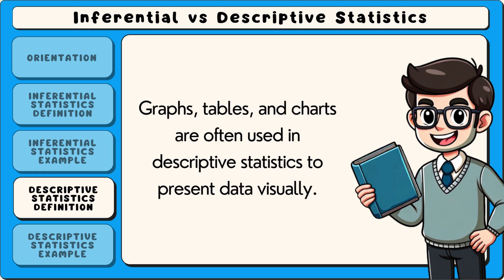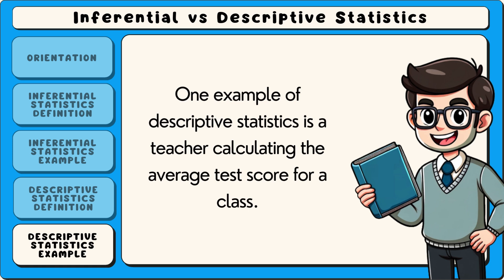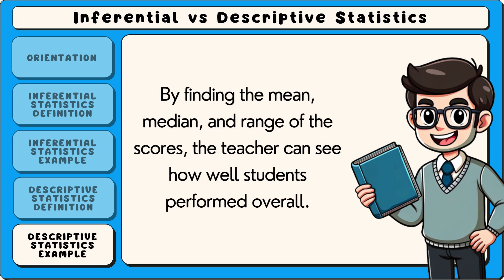Graphs, tables and charts are often used in descriptive statistics to present data visually. These methods help people quickly see patterns and trends without making predictions about what might happen in the future. One example of descriptive statistics is a teacher calculating the average test score for a class. By finding the mean, median and range of the scores, the teacher can see how well students performed overall.